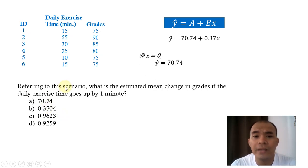For example, at x is equal to 0, if we will replace this one by 0 here, so our grade is 70.74. Without exercise time, our grade is 70.74. But if we're going to increase our exercise time by 1 minute, we will replace this x here by 1, so the y hat, or our grades, the estimated grade, the predicted grade will be 71.11, so there is an increase.